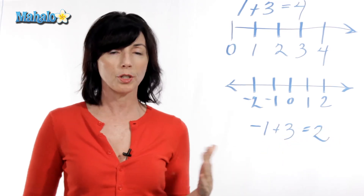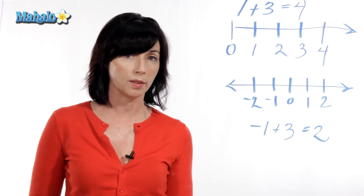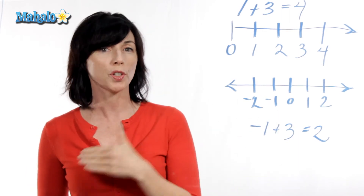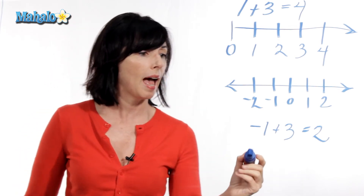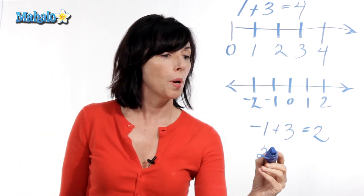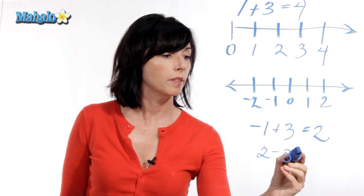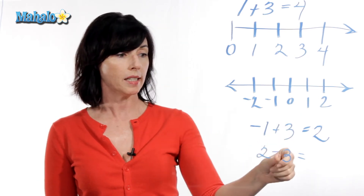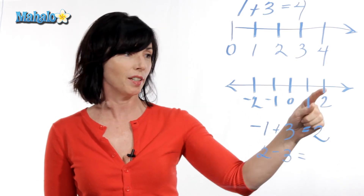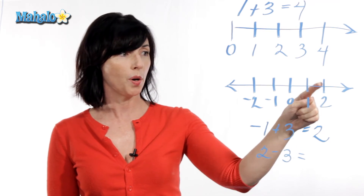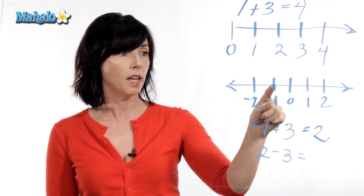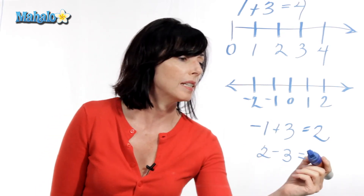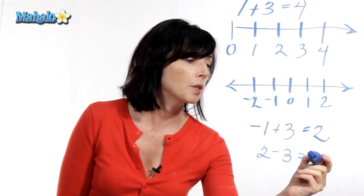Now, since addition means moving to the right on the number line, what do you suppose subtraction means? It means that you move to the left. So let's say we have two minus three. So we'll start at two, and since we're subtracting, we'll move this direction, three units. So we go one, two, three. And we land on minus one. So two minus three is equal to minus one.